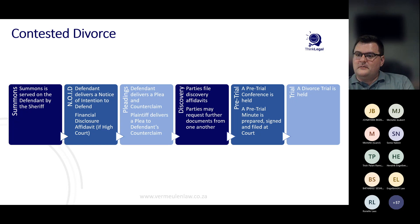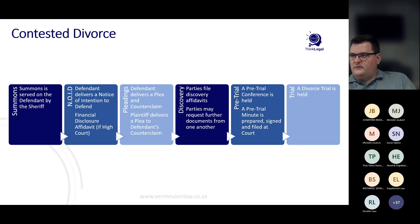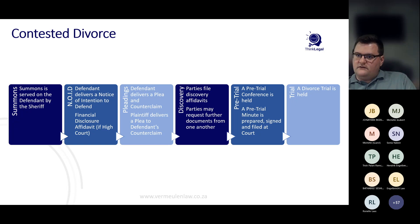Thereafter, the plaintiff would deliver a plea to the counterclaim. In a plea, you admit, deny, or confess and avoid the allegations — deny means no, admit means yes, and confess and avoid means 'yes, but' — there is a justification. That is your close of pleadings. This is your first phase of litigation — this is where your battle lines are drawn and your issues for adjudication are defined and delineated.